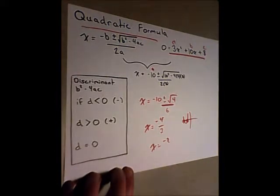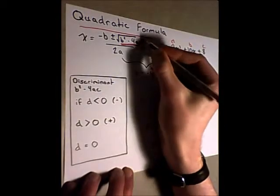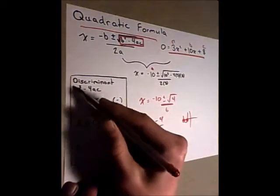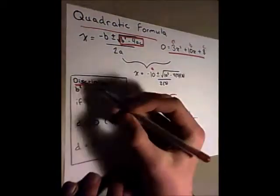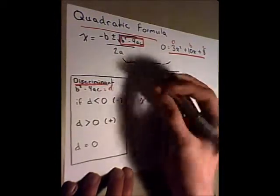An important thing about the quadratic formula that none of the others have is this piece right here. This is called the discriminant, where b squared minus 4ac is equal to d, the discriminant.